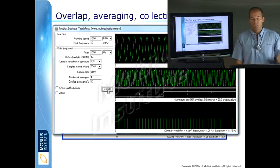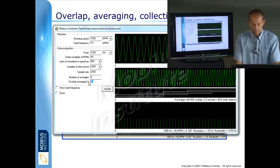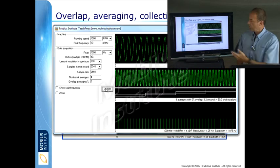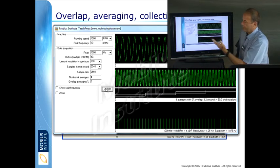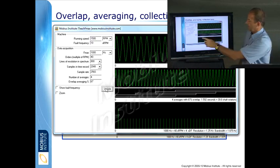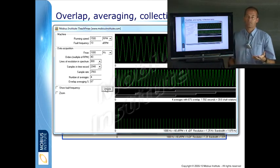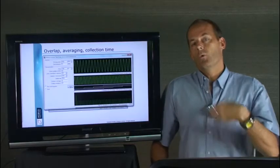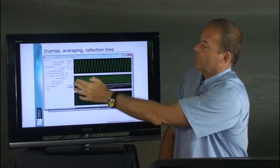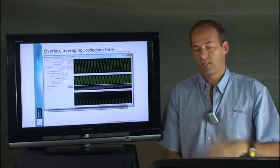Okay, but you can see how going from, for example, 50% to 100, it's actually 0% overlap, there's still four averages, but now it's 3.2 seconds of time. If I go to, for example, 67% overlap, it's now just one and a half seconds or thereabouts. So, we have saved some time at the machine, but notice that the machine hasn't gone through as many revolutions as it's running.